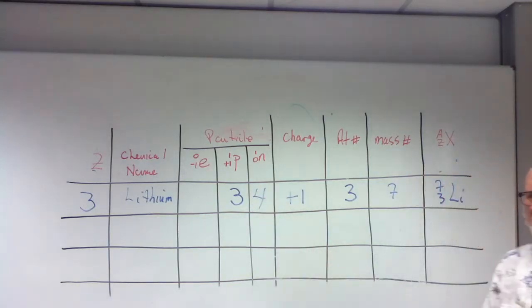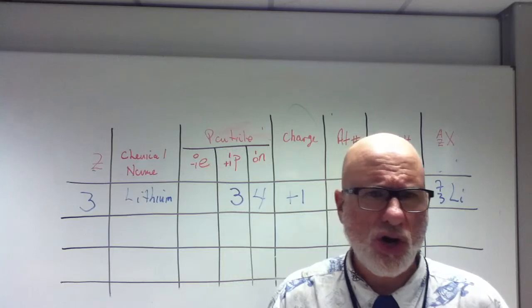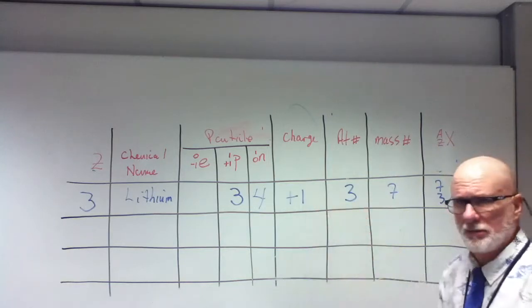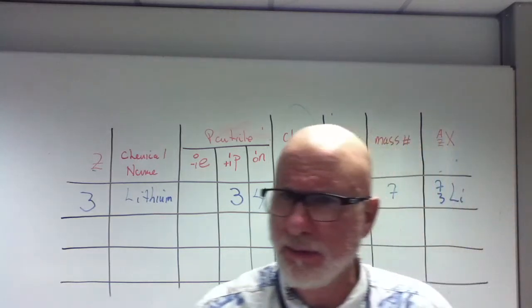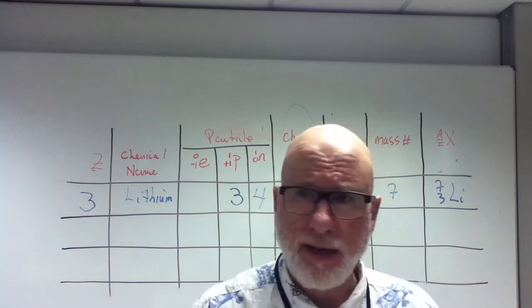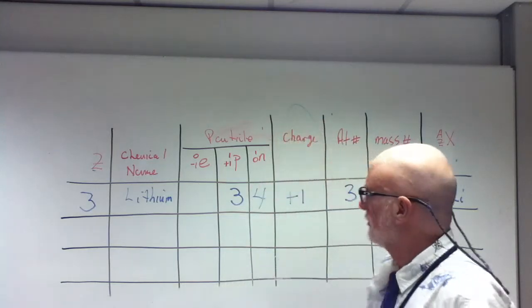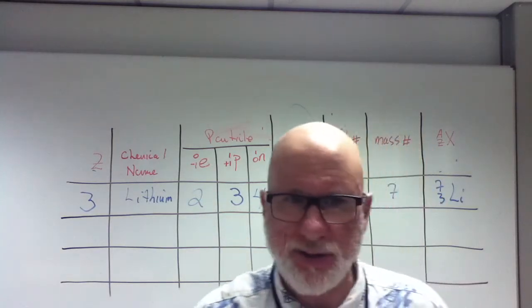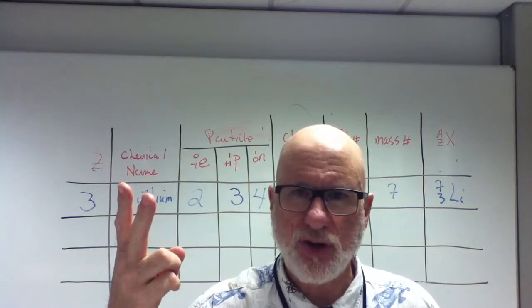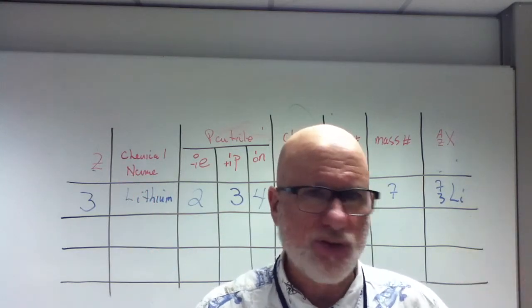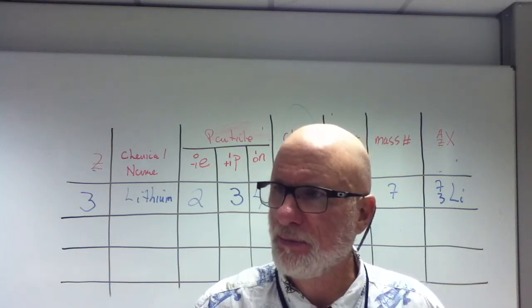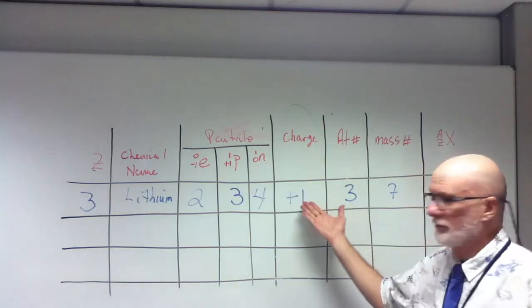And what about the number of electrons? Well, what's the charge of the particle? Plus what? Is it neutral? Oh, two. Oh yeah, it's plus one. So what does that mean? Two. Exactly. There's two. Try to figure it out, and then just check your work. I have two negative charges and three positive charges. What's a positive three plus a negative two? Plus one. Plus one, right?